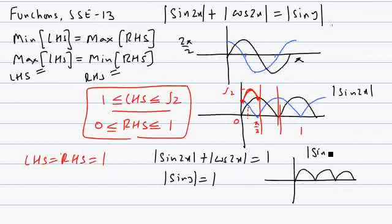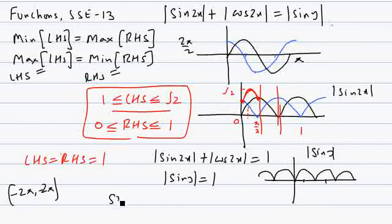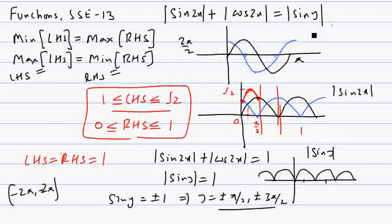From |sin y| = 1, we know sin y = ±1. Given the interval −2π to 2π, this gives y = ±π/2 and ±3π/2. So there are four values of y that satisfy this equation, and the answer is 4.